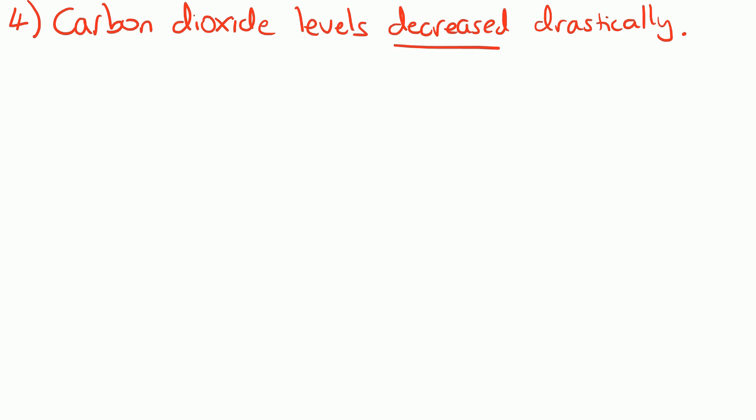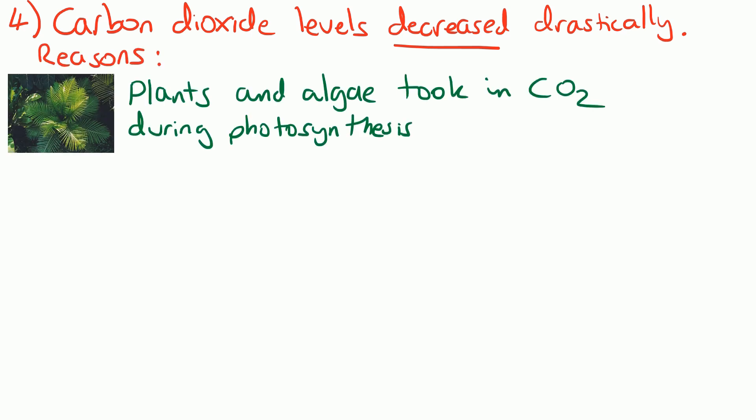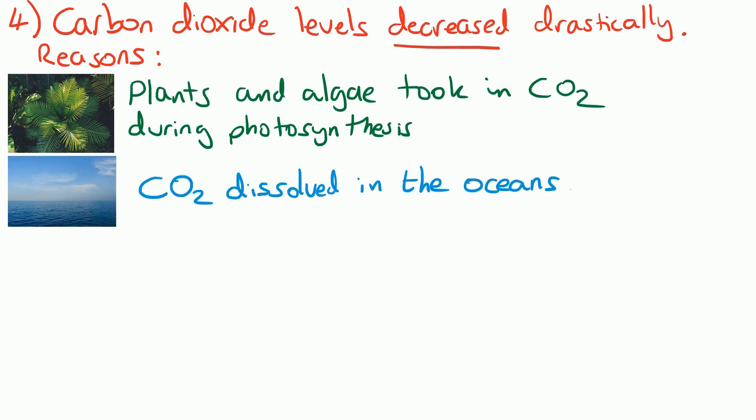First of all, the plants and algae that we've just been talking about producing oxygen were at the same time taking in carbon dioxide during photosynthesis. Quite a lot of carbon dioxide also dissolved in the oceans, and some carbon dioxide got locked away for the last millions of years — some of that was used by sea creatures as they formed shells around themselves.